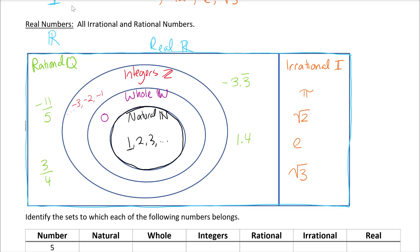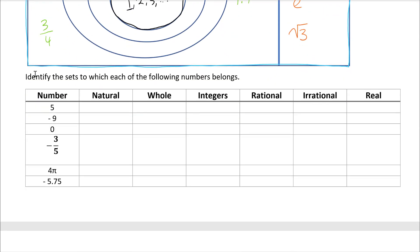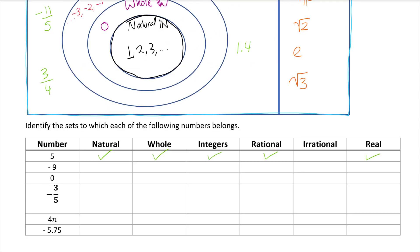Now let's classify some numbers into their categories. The number 5 is a natural number, which means it's also a whole number, an integer, a rational, and a real — since 5 belongs in the natural circle, it belongs in all the nested categories as well.